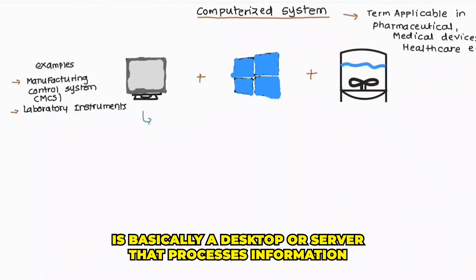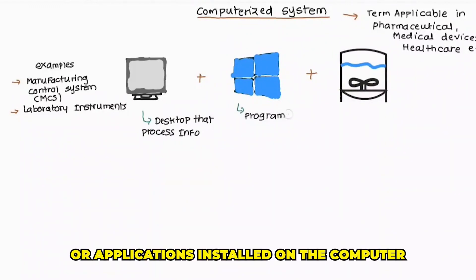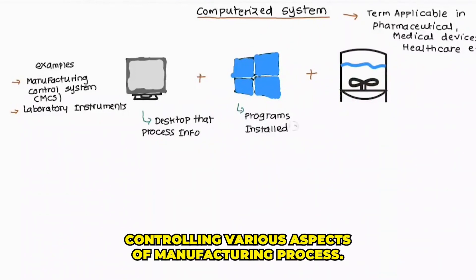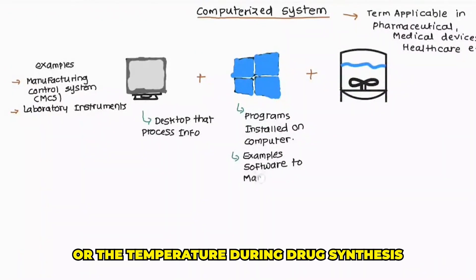Computer, as we all know, is basically a desktop or server that processes information, and software here refers to the programs or applications installed on the computer, controlling various aspects of the manufacturing process. For instance, it could manage the mixing of ingredients or the temperature during drug synthesis.